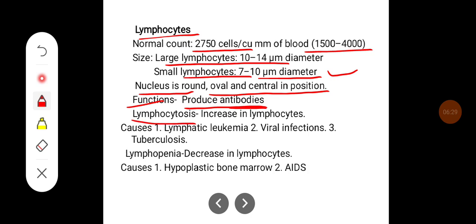Lymphocytosis can occur, the condition where the lymphocyte count is increased. It can happen in lymphocytic leukemia, viral infection and tuberculosis. Whereas lymphopenia, the reduced number of lymphocytes, can occur in hypoplastic bone marrow and acquired immunodeficiency syndrome, that is HIV infection.